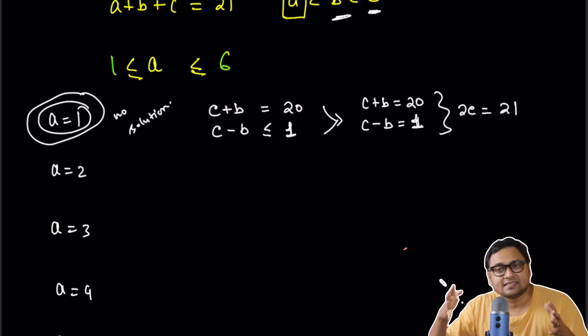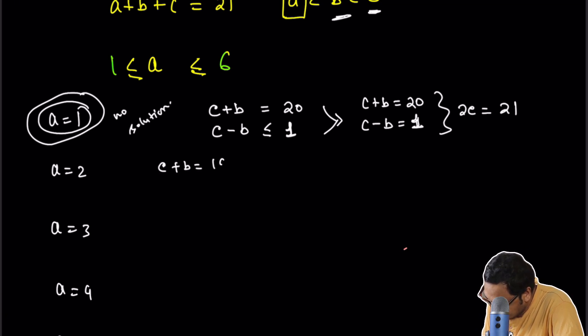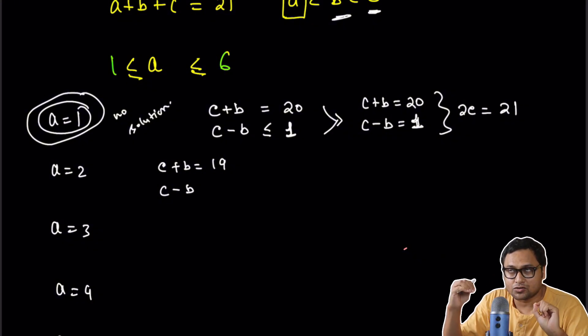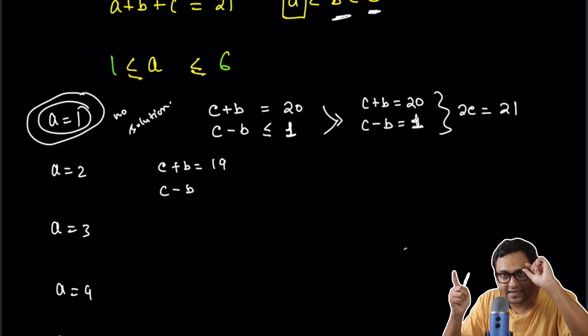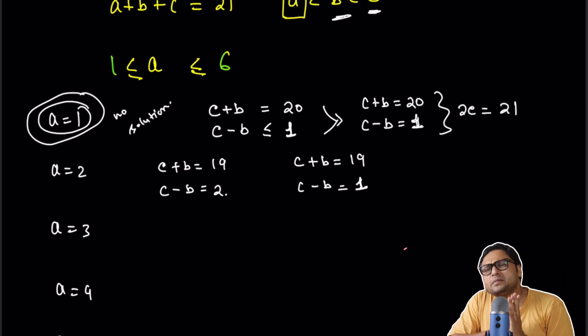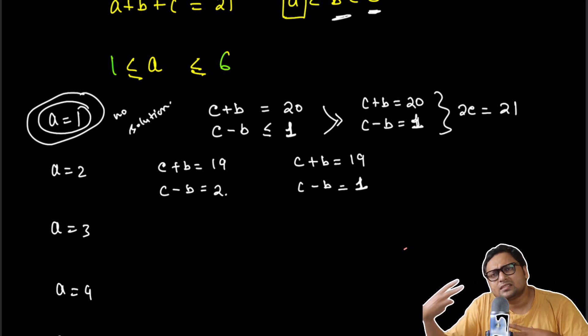So for A equal to 2, C plus B is 19. C minus B, well, it's either 2 or 1. It's less than or equal to 2.